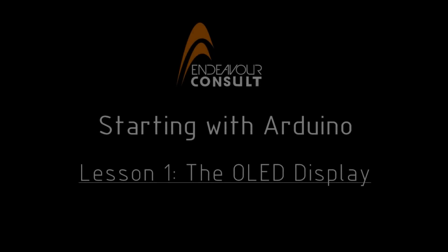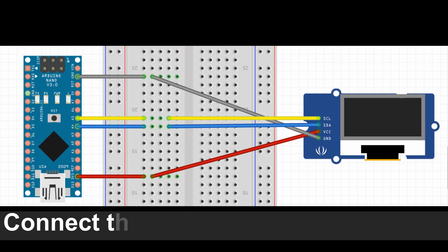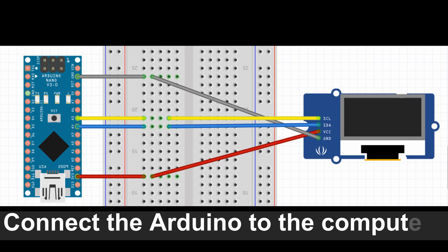Welcome to Endeavor's Consult, starting with Arduino Lesson 1: the OLED display. The first thing you need to do is to connect your Arduino to the OLED display like this. You can use a breadboard or you can connect it directly.